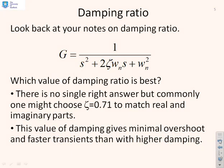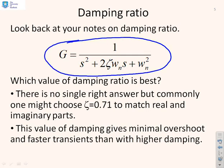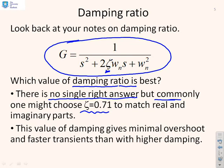As background, from videos on second-order systems, you can represent principal dynamics using a normalised form which is good for underdamped systems. A common question is what damping ratio zeta is best. It's common to aim for zeta around 0.7 because it gives faster transients with minimal overshoot, whereas a zeta of around one results in somewhat slower transients. A zeta of 0.71 implies that the real and imaginary parts of the roots are equal in magnitude.